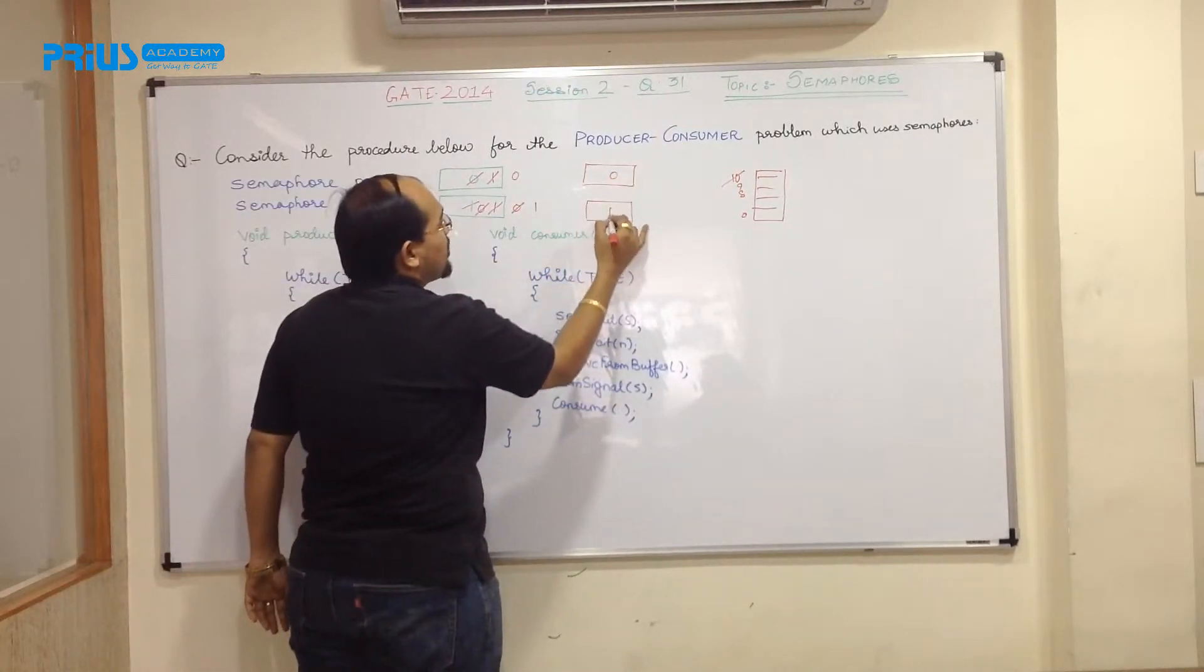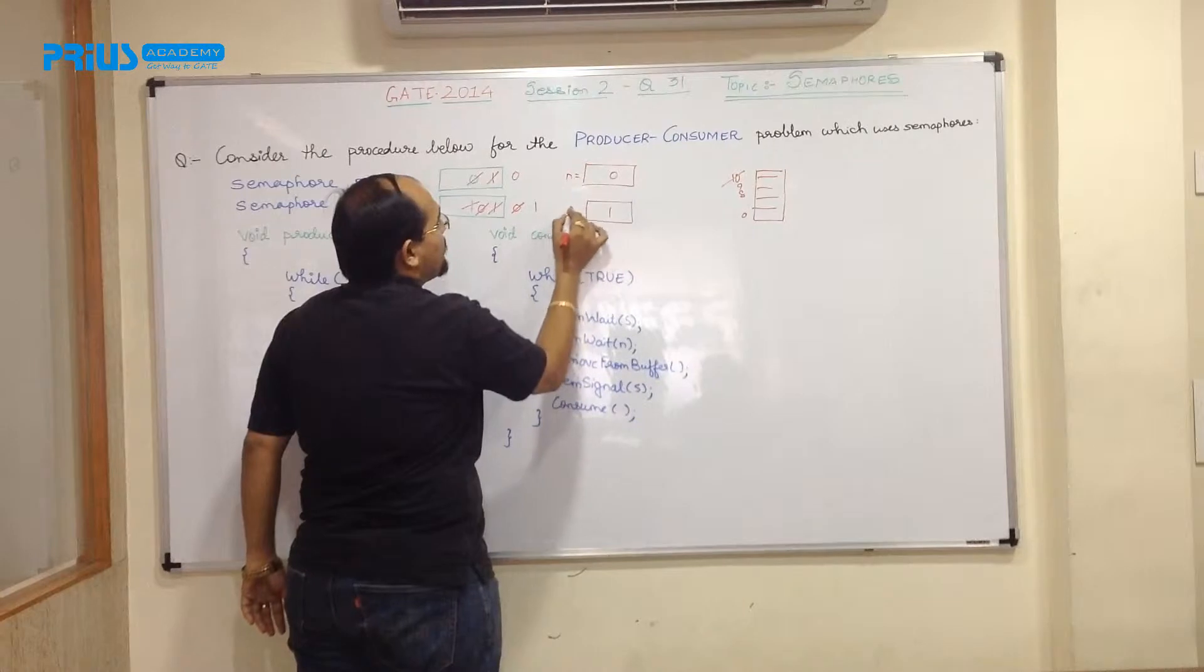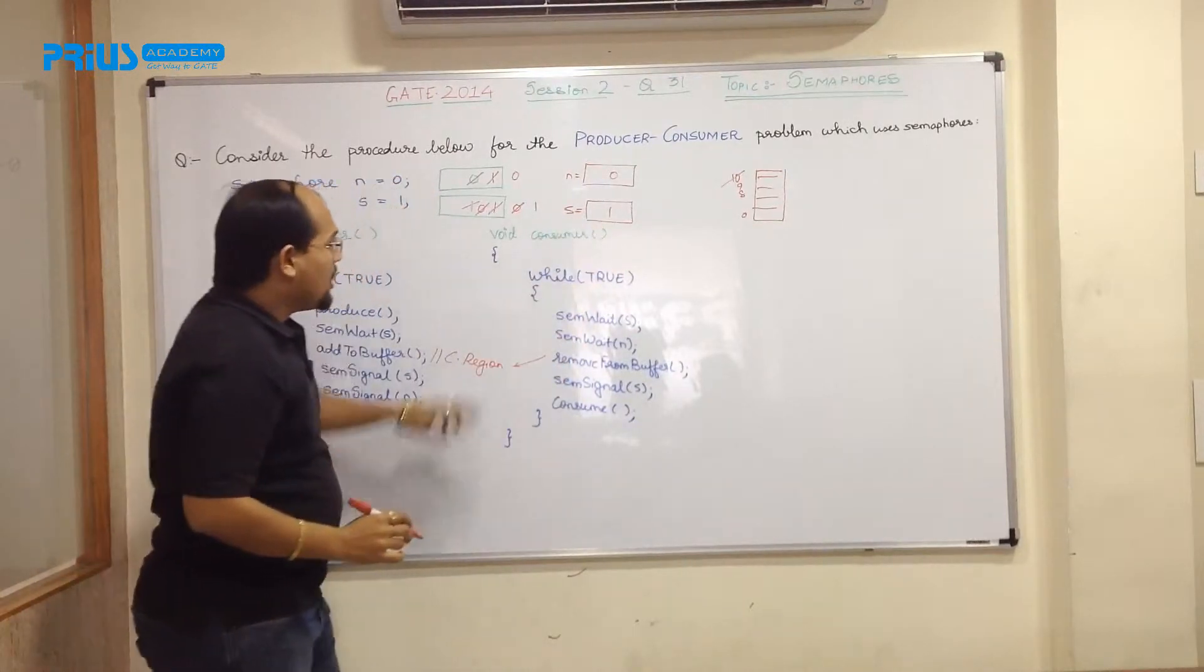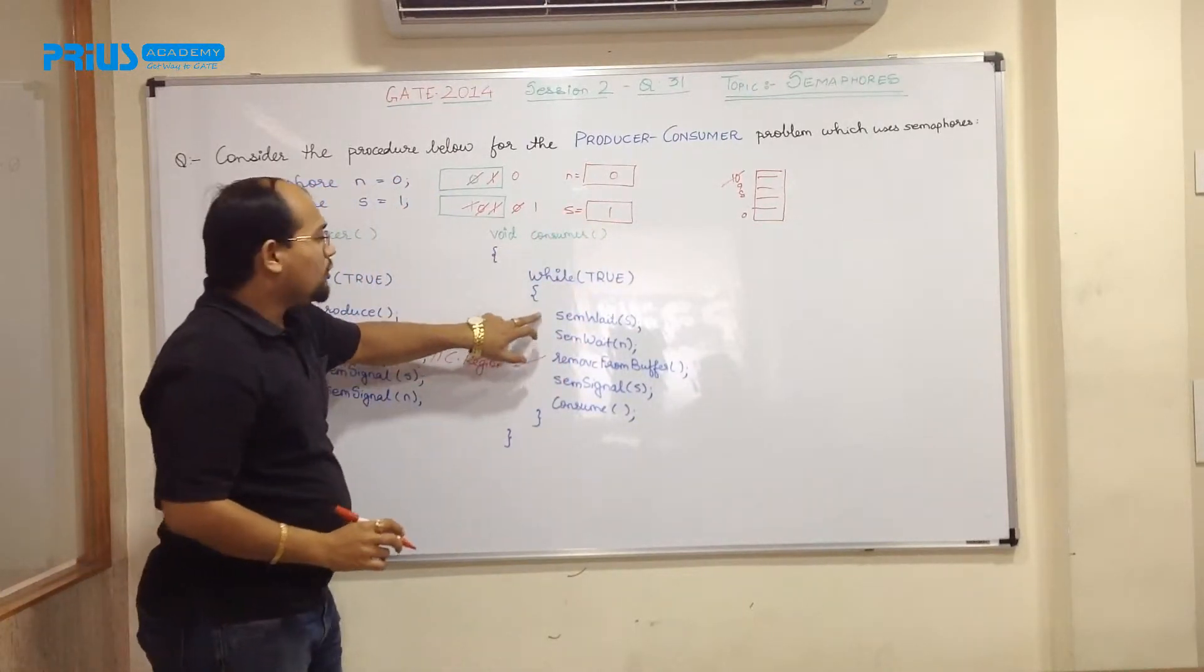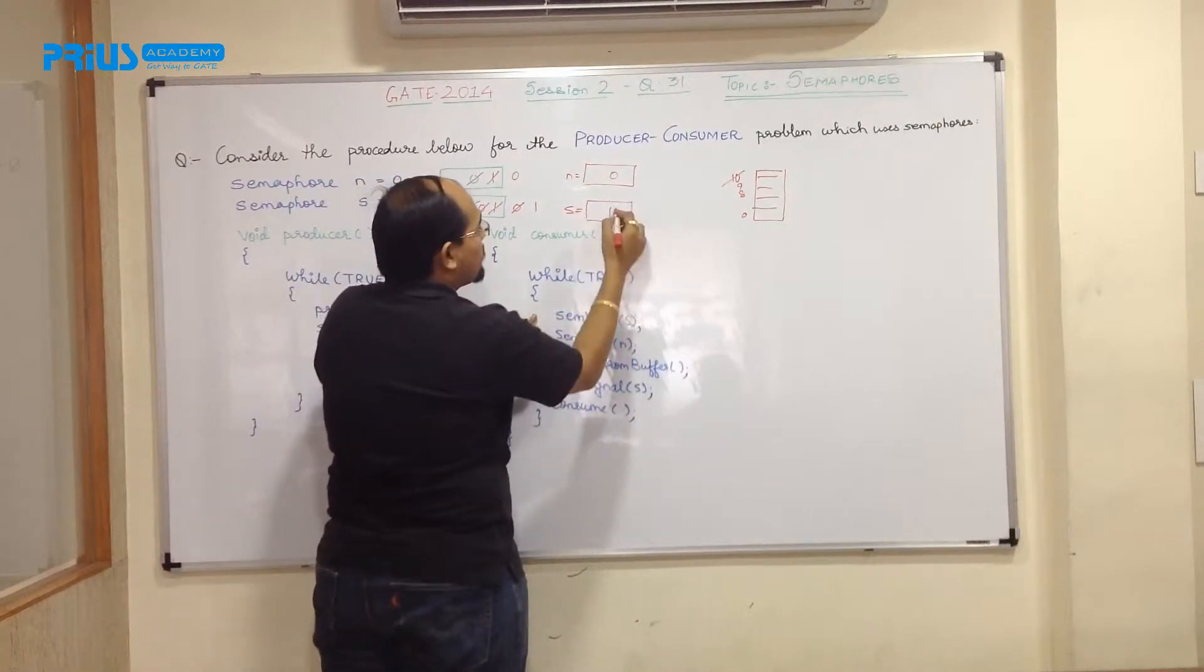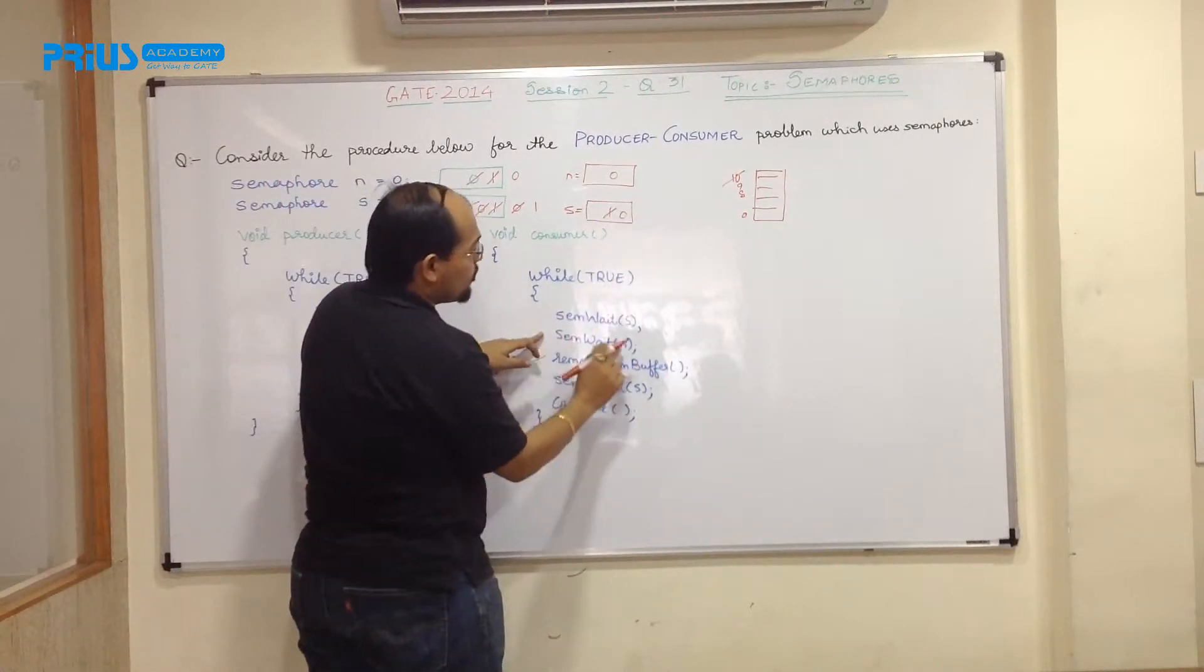Now take a scenario where consumer is executing first and then a producer. So what will be the initial value? Initial values are for N it is 0 and for S it is 1. Now if a consumer is consuming first, so what did happen? Semaphore wait S. So this will become 0. Semaphore wait N.